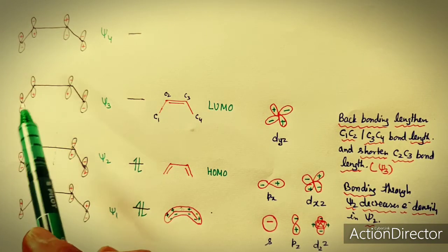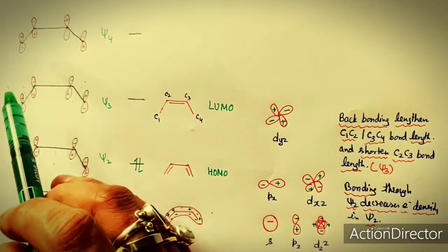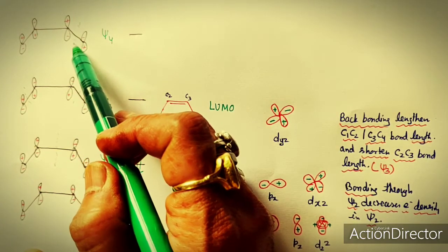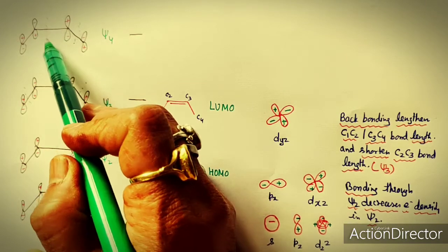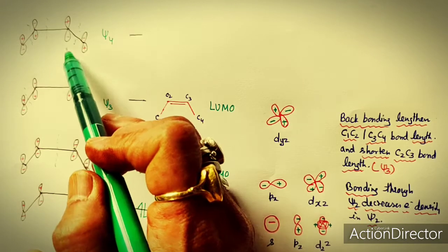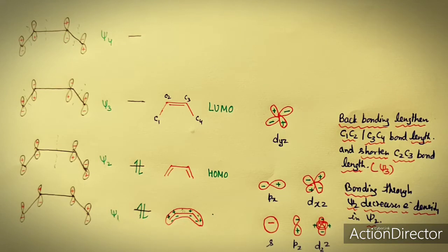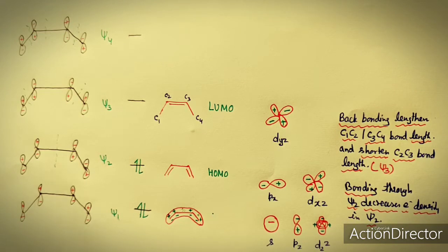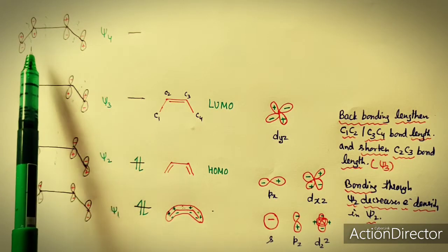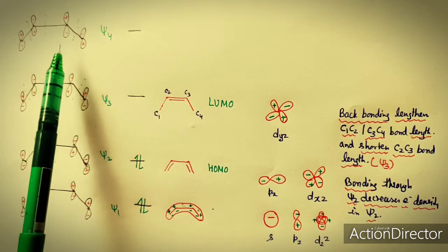Psi 3 has two nodes (plus–minus, plus–minus), and psi 4 has three nodes (plus–minus–plus–minus). As the number of nodes increases, the energy of the molecular orbital increases. Psi 1 has the lowest energy with no nodes, and psi 4 is the highest energy antibonding molecular orbital with three nodes.